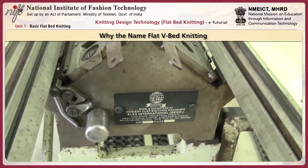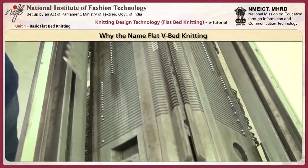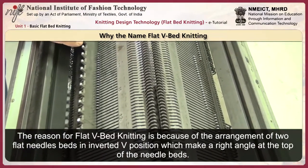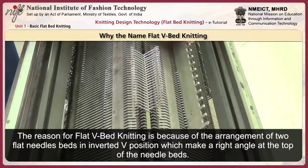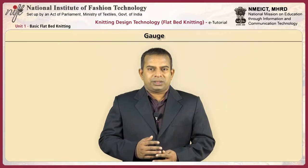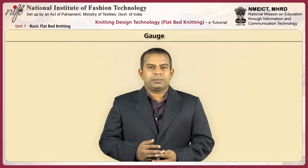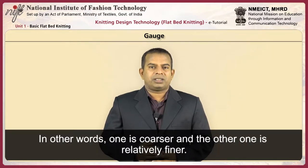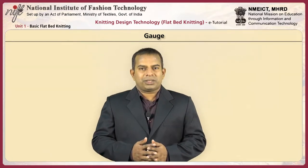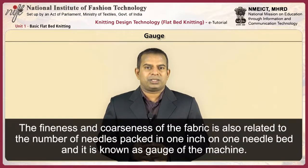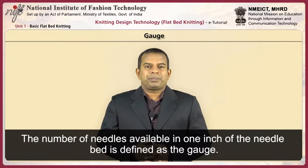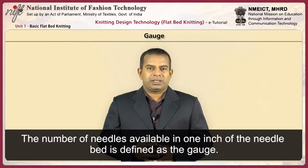In this course, since we are concentrating on flat knitting, it will be interesting to start with the name itself. The reason for the term 'flat V-bed knitting' is the arrangement of two flat needle beds in an inverted V position, making a right angle at the top of the needle bed. The fineness and coarseness of fabrics is also related to the number of needles packed in one inch on one needle bed, and this is known as the gauge of the machine. The number of needles available in one inch of the needle bed is defined as the gauge.